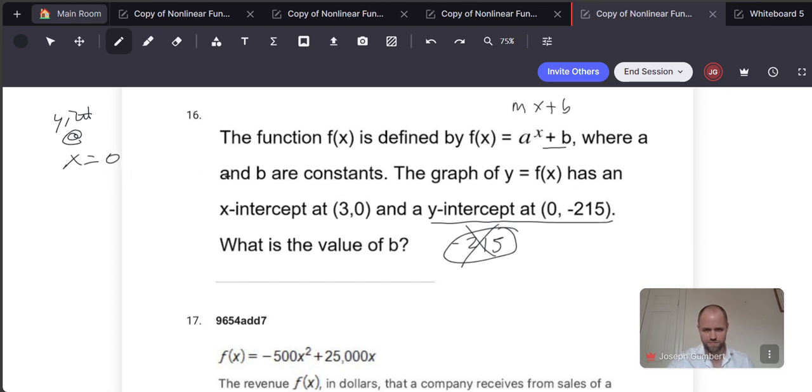So this would be at y-intercept at x equals 0. So we could say negative 215 is equal to a to the 0 plus b. And anything to the 0 power is equal to 1. And so this is really going to be negative 215 is equal to 1 plus b.